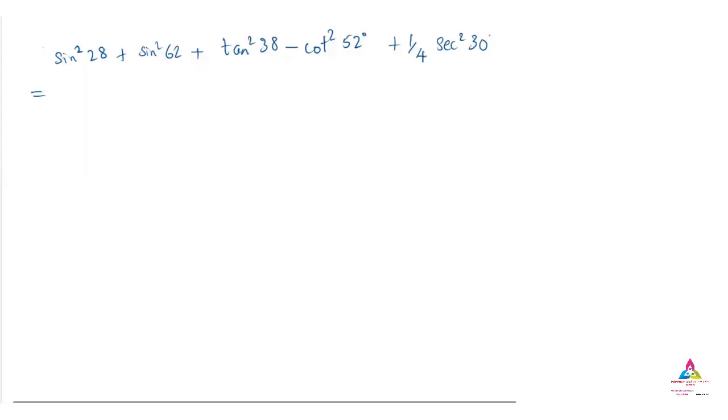In this question they have given sine square 28 degree plus sine square 62 degree plus tan square 38 minus cot square 52 plus one by four secant square 30 degree. So we have to write it down.